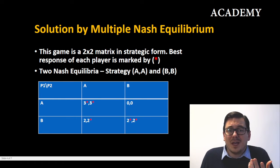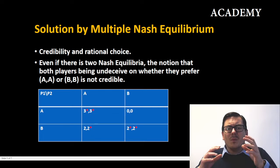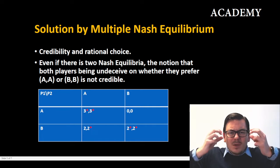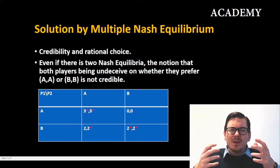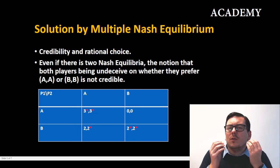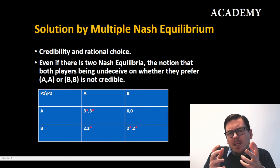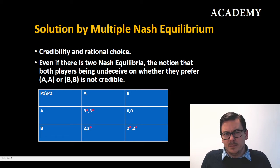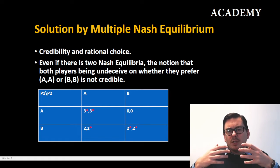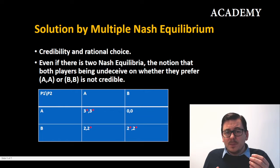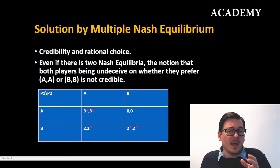So can we say something more about it? Can we try to limit one of them? Here we should think of rational choice and think of the word and the meaning of credibility. So even if there are two Nash equilibria, the notion that both players should be undecisive on whether they prefer (A,A) or (B,B) is not credible.